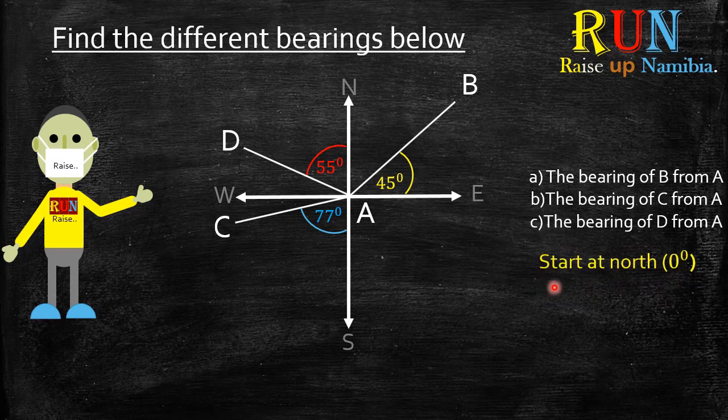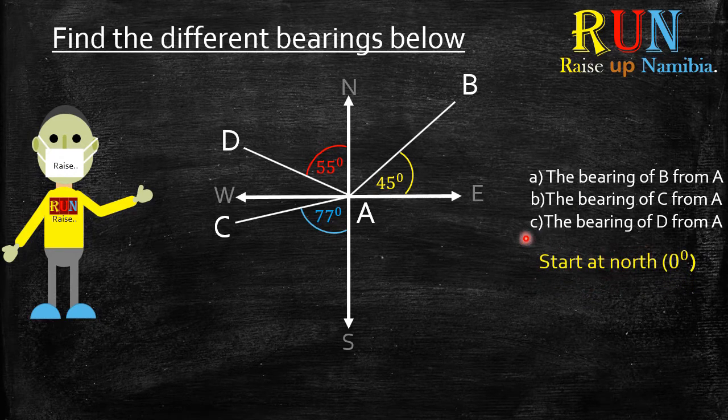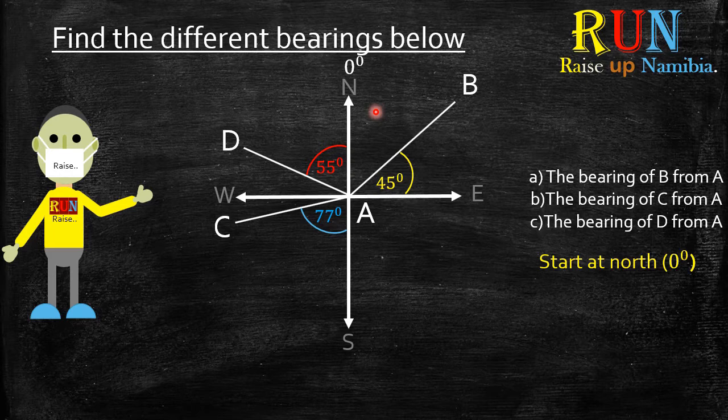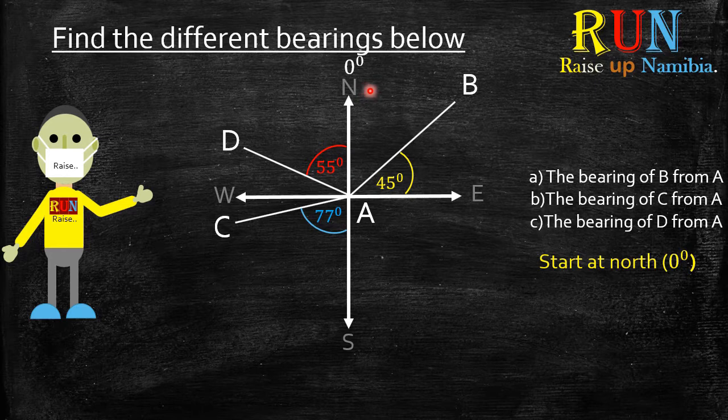So property number one, always start at the north, which is over here. Now the north is our zero degrees. Think of it as grade zero or pre-primary, which is where you started in the schooling system. You start in grade zero and then primary and then eventually you are in high school. Now in bearings, we start at the north. So the north is our pre-primary or our grade zero.